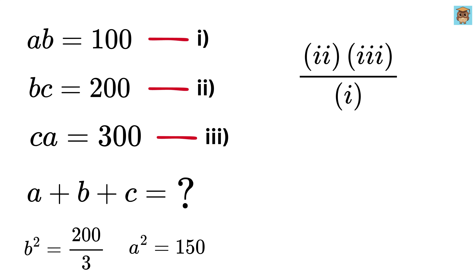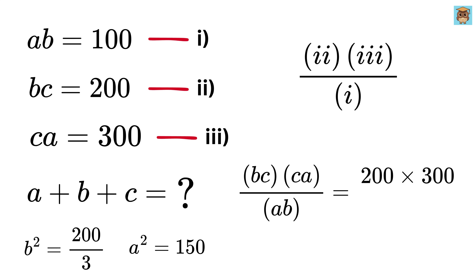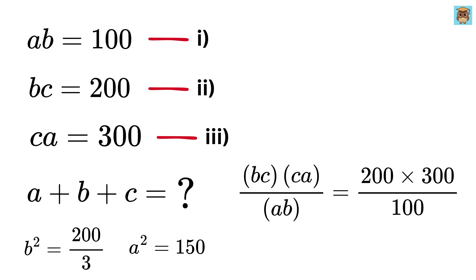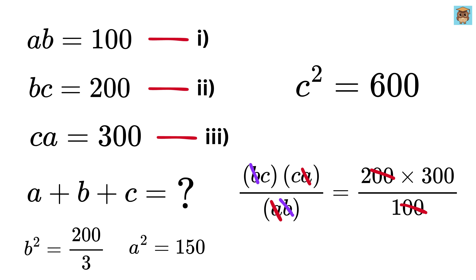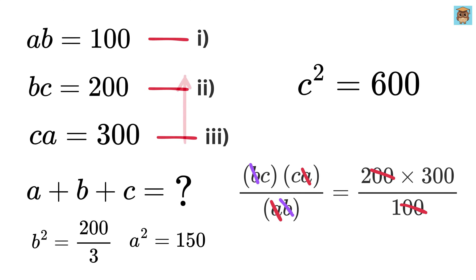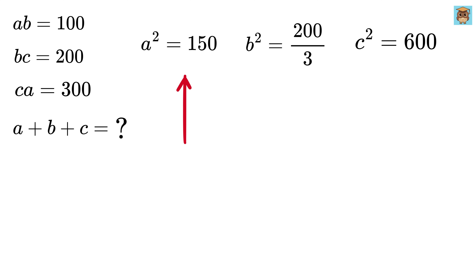In step three, I multiply the second equation with the third equation and divide by the first equation. So we get bc times ca over ab equals 200 times 300 over 100. Here a will get cancelled out and b will also get cancelled out, and we are left with c squared, which equals 300 times 2 or 600.